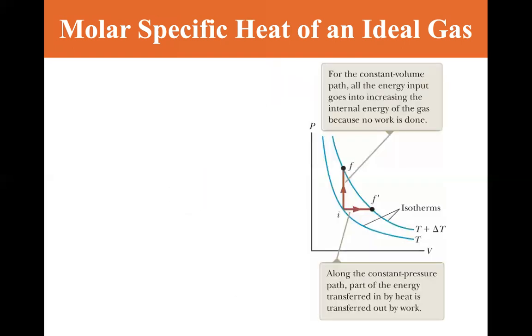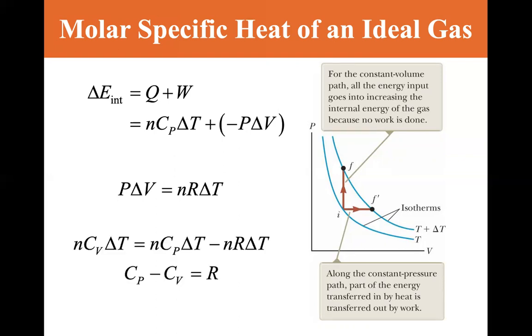Now when we're looking at constant pressure, the change in internal energy is equal to the heat plus work. So Q is equal to nCp delta T plus the work minus p delta V. And p delta V is equal to nR delta T, so if we substitute that in, we see that